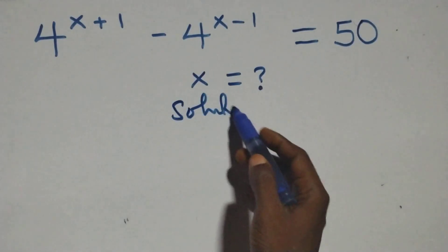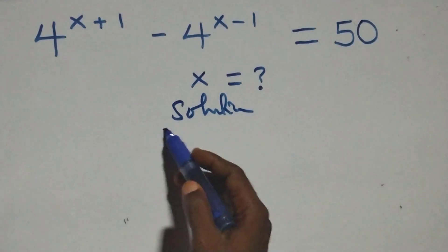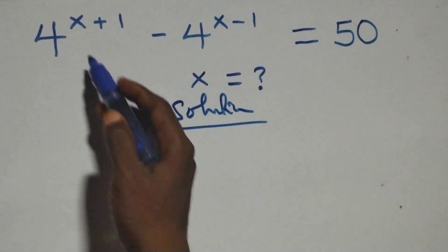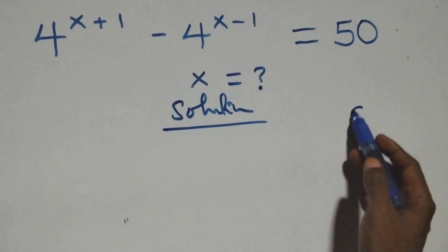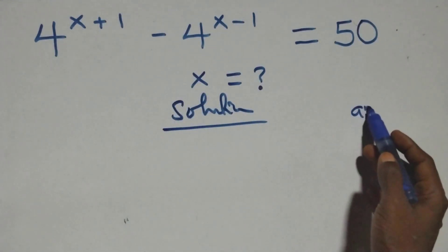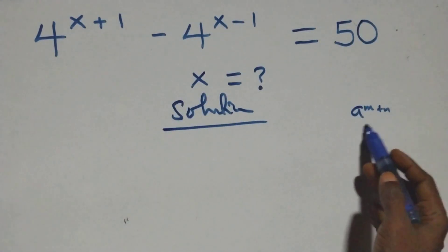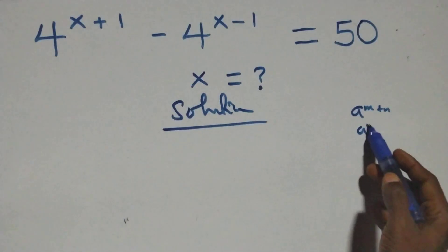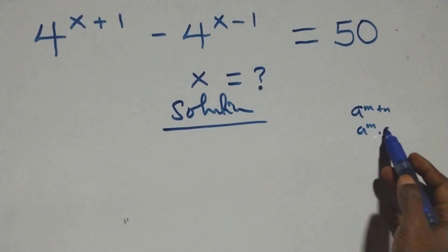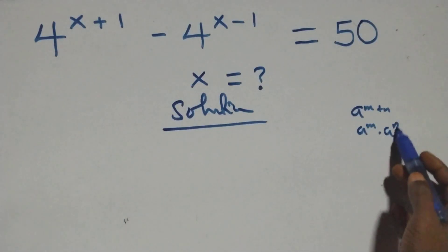Solution from here. What we have here, we can rewrite this: when we have a raised to power n plus n, same thing as a raised to power n times a raised to power n.